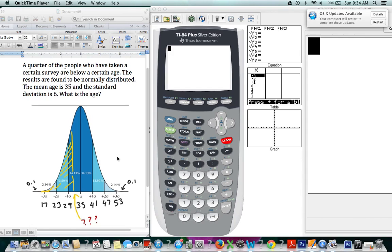So let's look at this question together. A quarter of the people who have taken a certain survey are below a certain age, and the mean is 35 here and the standard deviation is 6. So we did what we would always do, starting off by labeling our diagram, 35 in the middle.